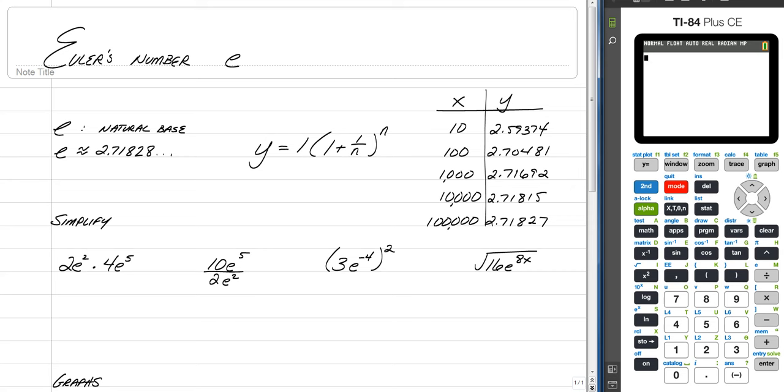So, now you know pi is 3.14, blah, blah, blah, blah. Now you know e is 2.718, and we continue.